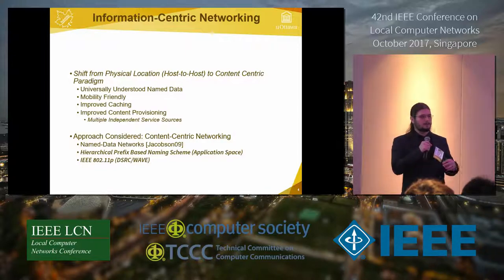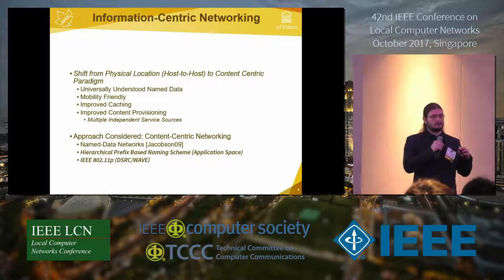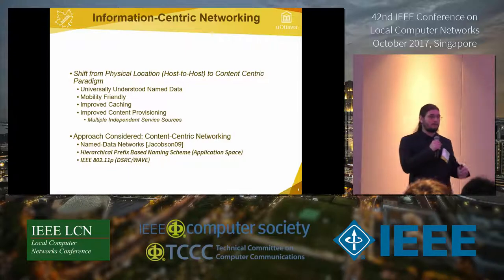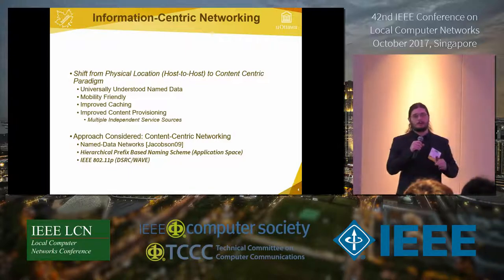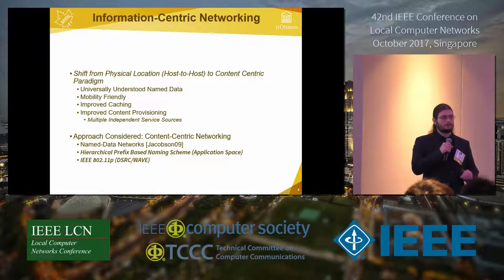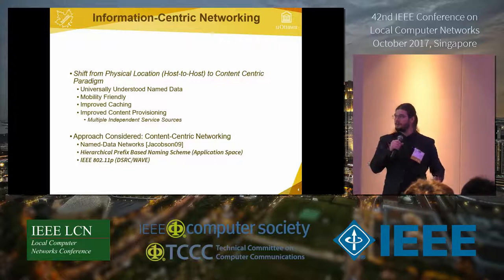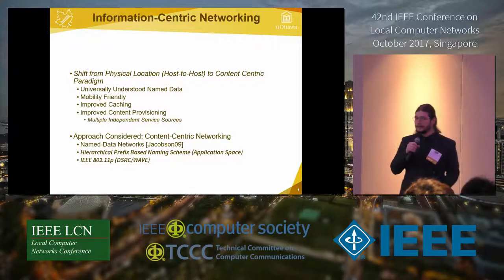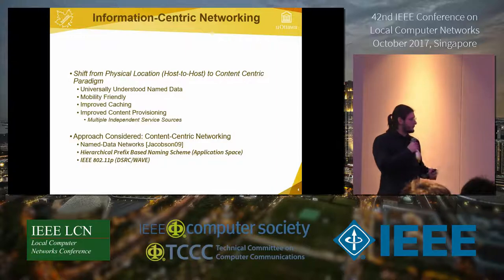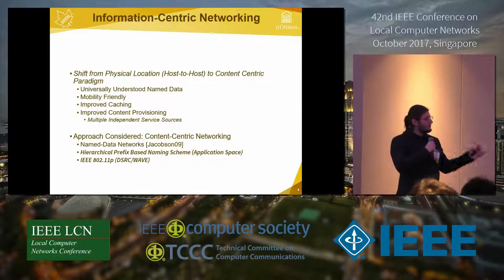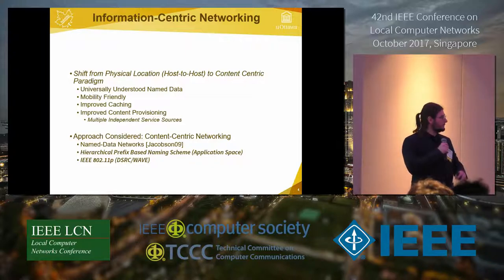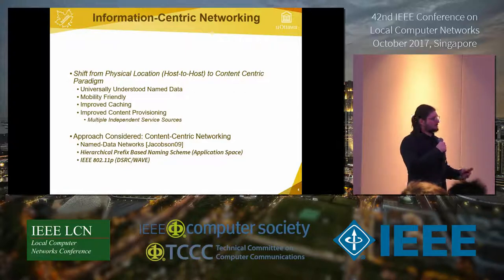Given a service class, multiple objects can serve a request. For example, traffic information doesn't necessarily come from a specific service provider — it can come from the perception of neighboring vehicles at a specific location. For this work, we consider content-centric networking, specifically named data networking with a hierarchical prefix-based naming scheme.